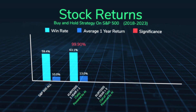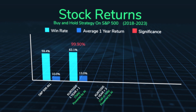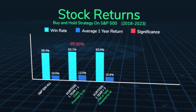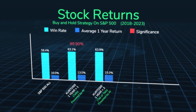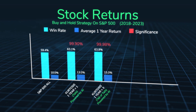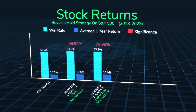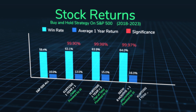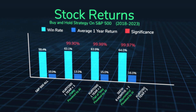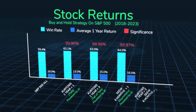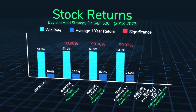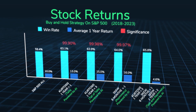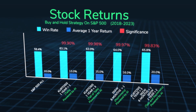When net kurtosis was greater than three — and for statisticians that would be greater than six relative to normal — win rates went from 63.1% to 63.9% and average returns from 13% to 15%, with rising statistical significance. Then I added asymmetry: one-year kurtosis greater than three, six-month skew greater than one, and one-year skew greater than two. Taking the tails of the tails and asymmetry together, the win rate went from 59% to 66% and the average trade went from 10% to 20%.